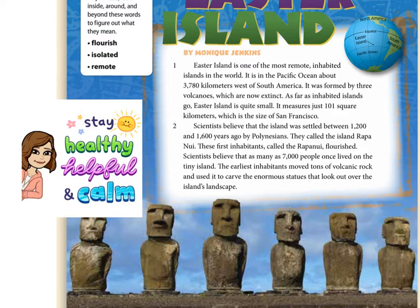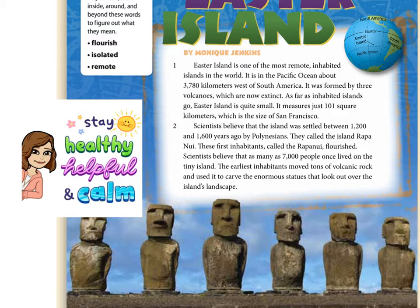Paragraph 2: Scientists believe the island was settled between 1,200 and 1,600 years ago by Polynesians. They called the island Rapa Nui. These first inhabitants, called the Rapa Nui, flourished — scientists believe as many as 7,000 people once lived on the tiny blank. The earliest inhabitants moved tons of volcanic rock and used it to carve the enormous statues that look out over the island's landscape. I'm noticing the text has given me more information about those images — they're statues overlooking the island.